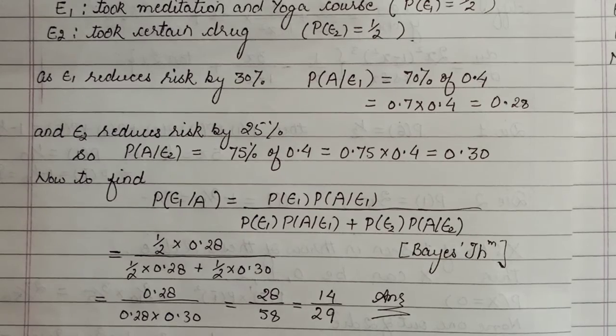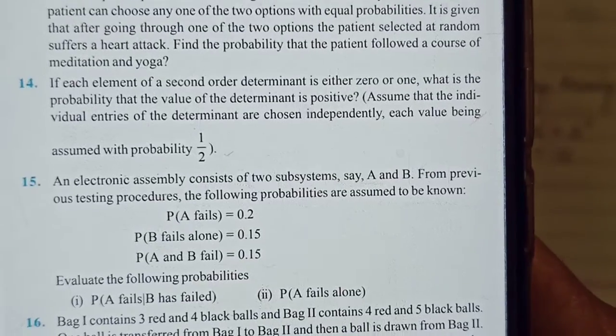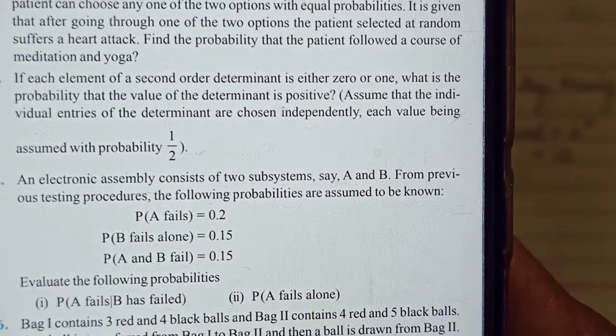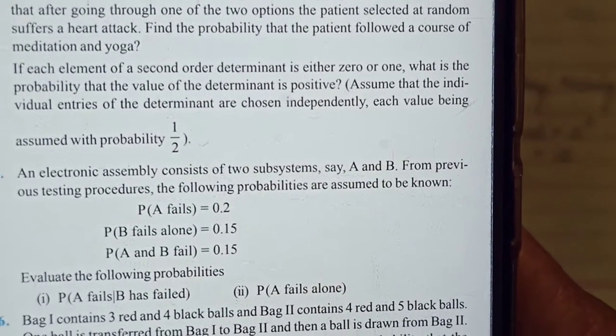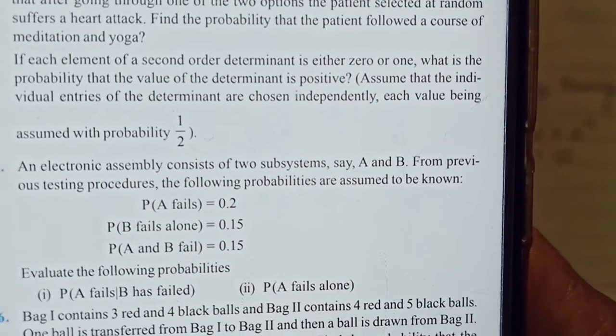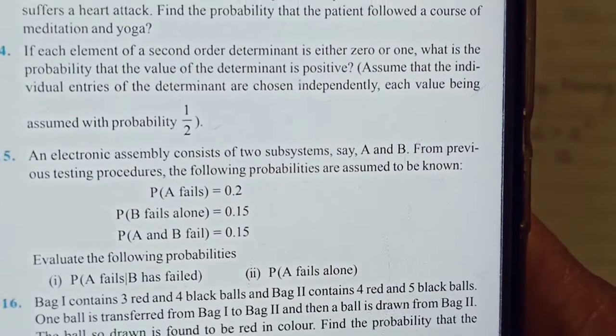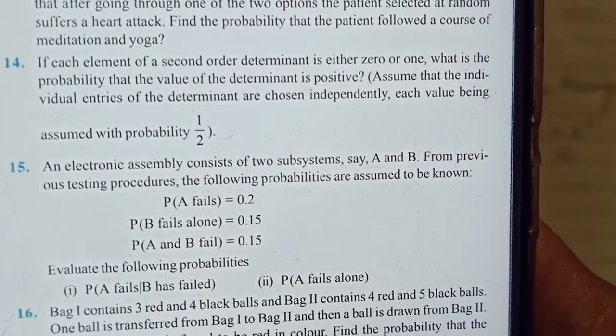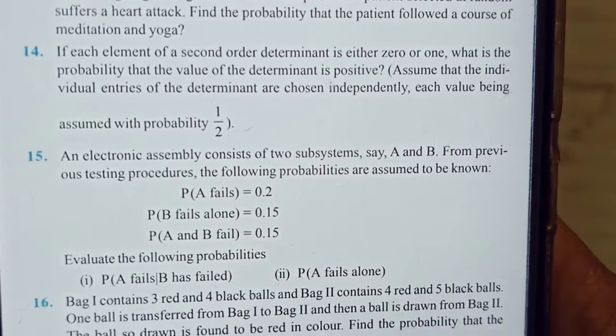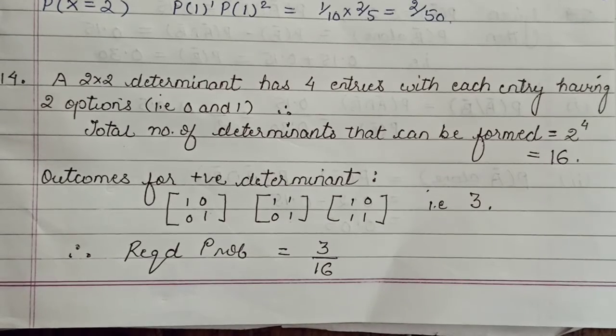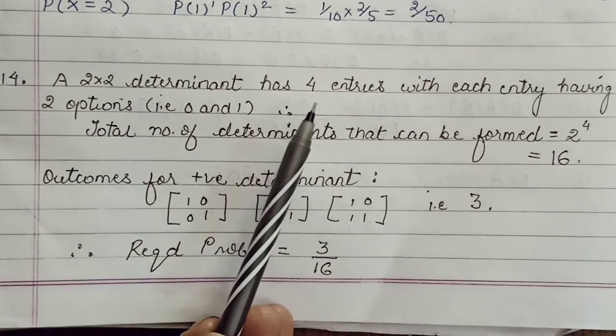Next, the 14th one children. It is saying that if each element of a second order determinant is either 0 or 1, what is the probability that the value of the determinant is positive? Assuming that individual entries in the determinant are chosen independently - that has nothing to do with it anyhow. So what are we going to do in this?